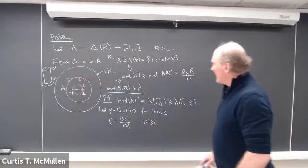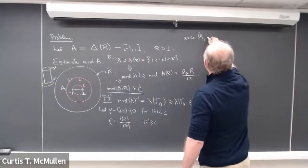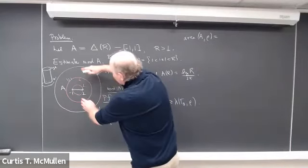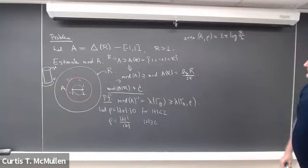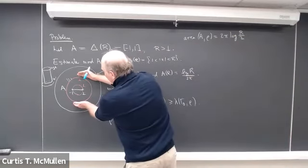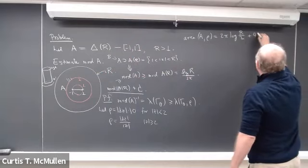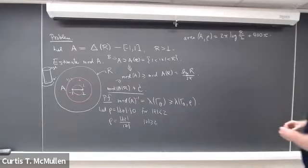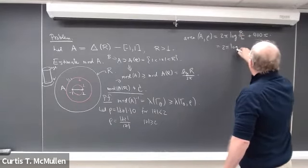What's the area of A in this metric? We can compute it exactly. From radius 2 to R, this is a cylinder of circumference 2π and height log(R/2). Then on the inside, we have a Euclidean disk of radius 2, so area πr² = 4π, but multiplied by 10² = 100, giving 400π. So a good way to think of the total area is 2π log R plus a constant. We're interested in the case where R is large, so we don't care about the additive constant.